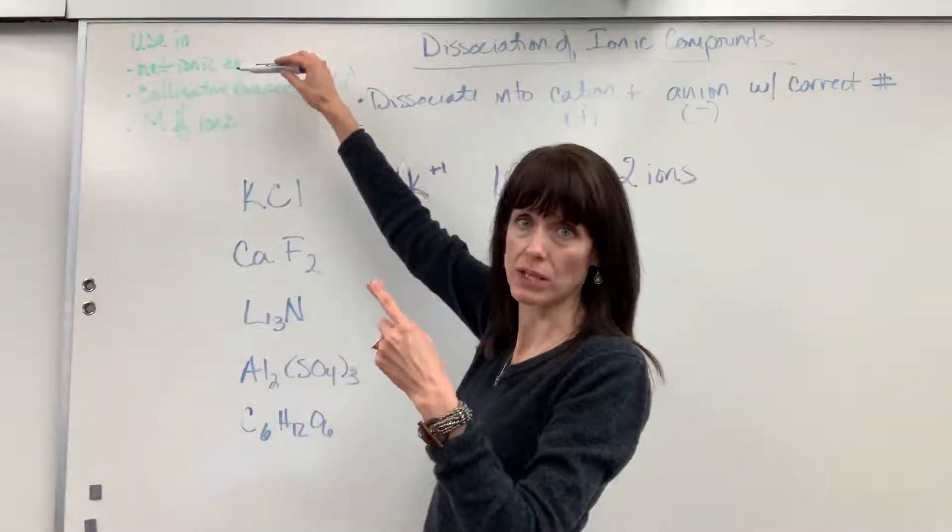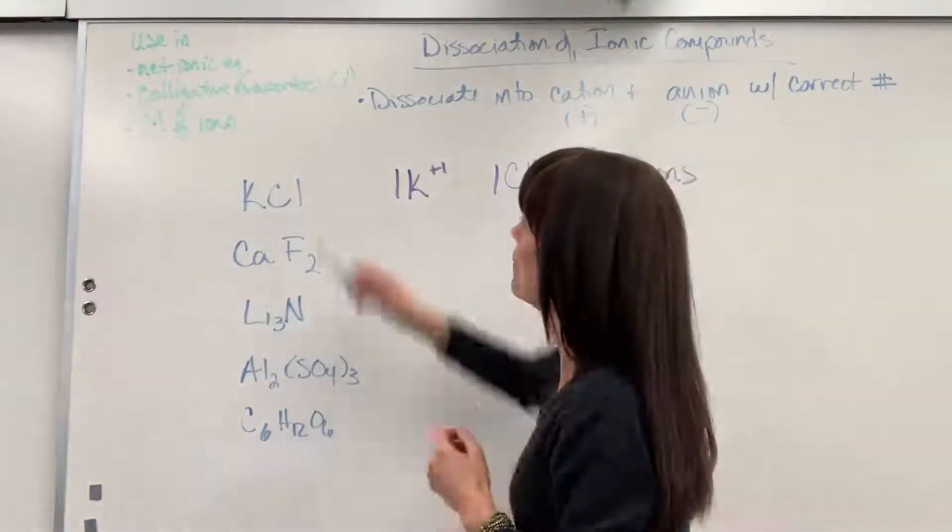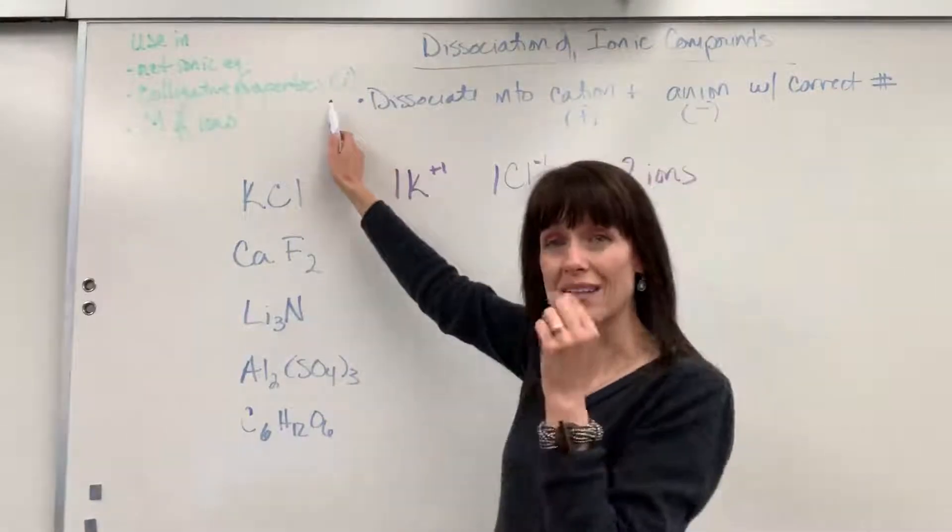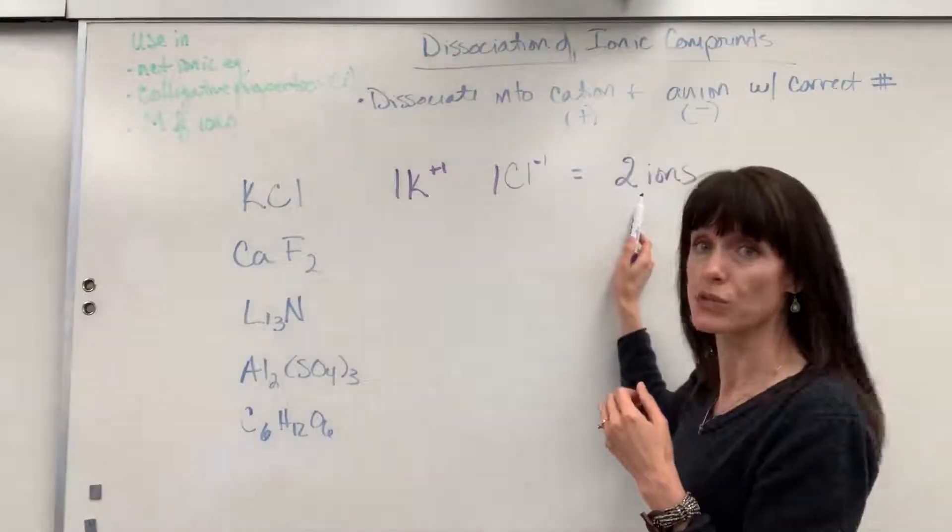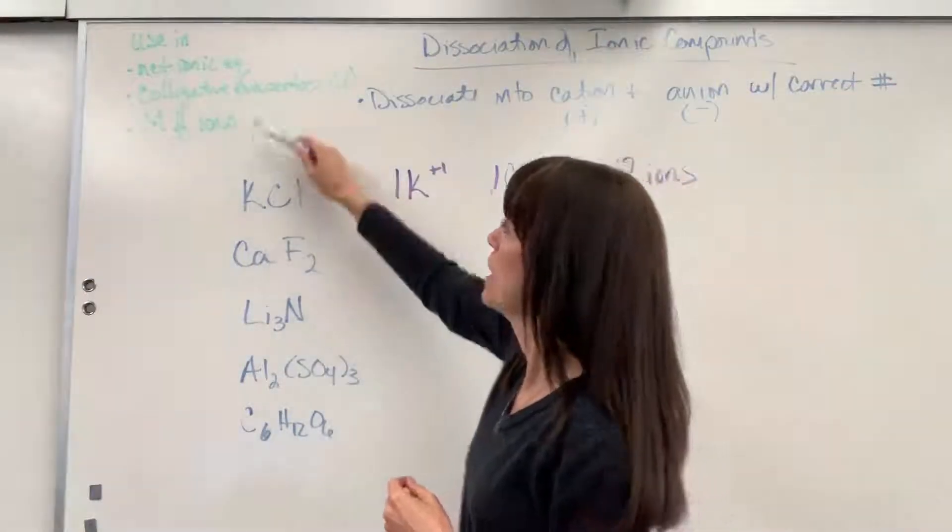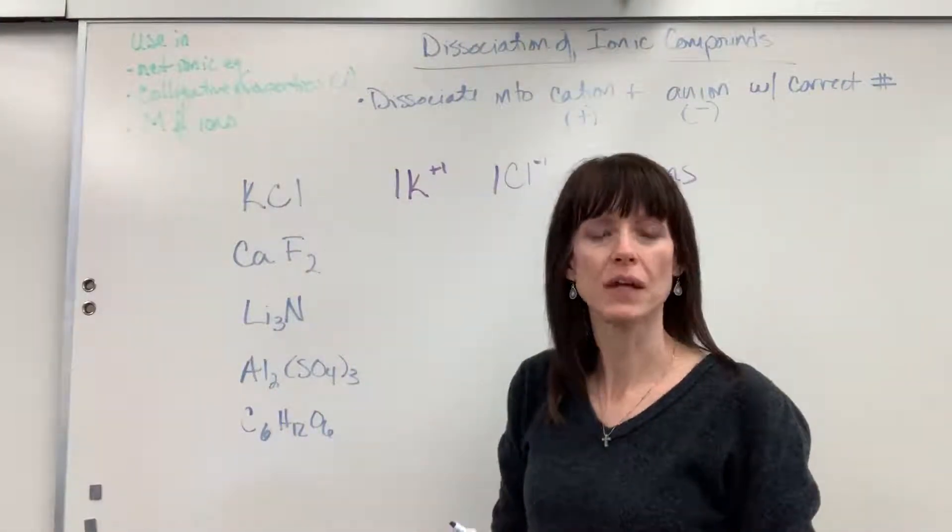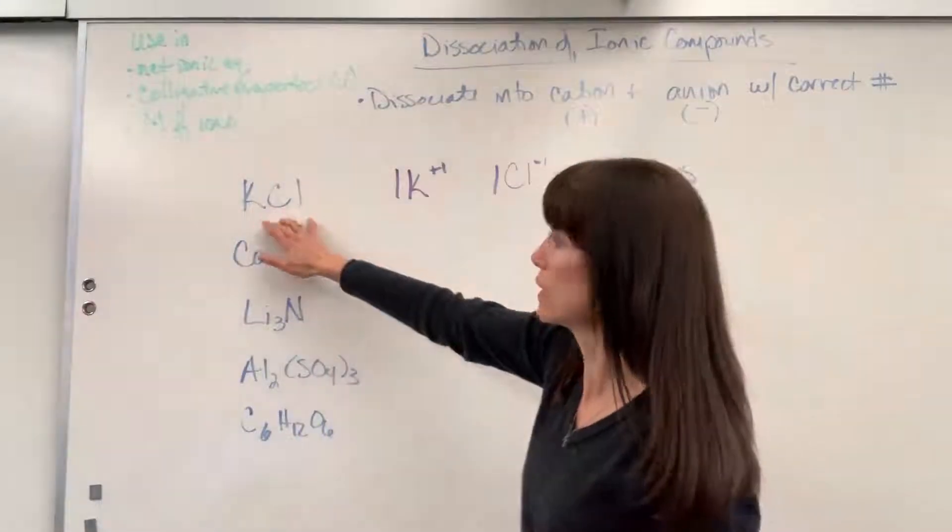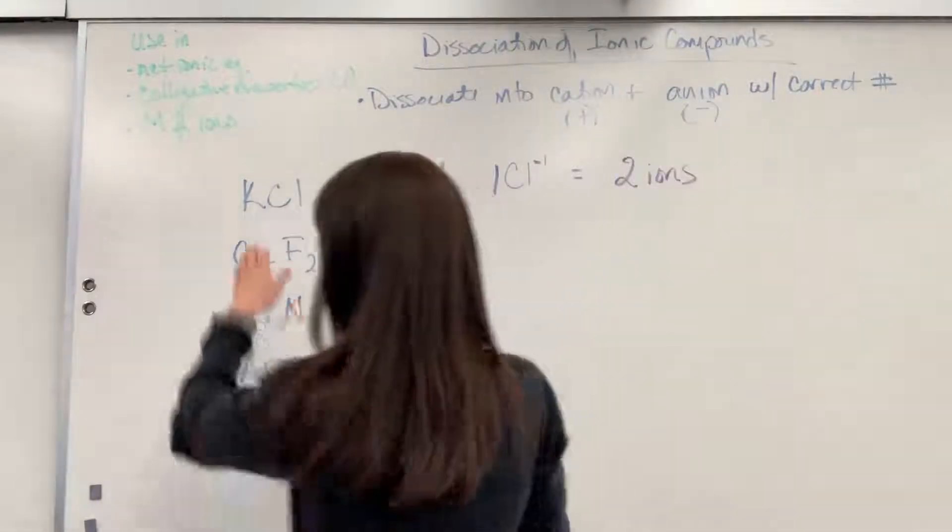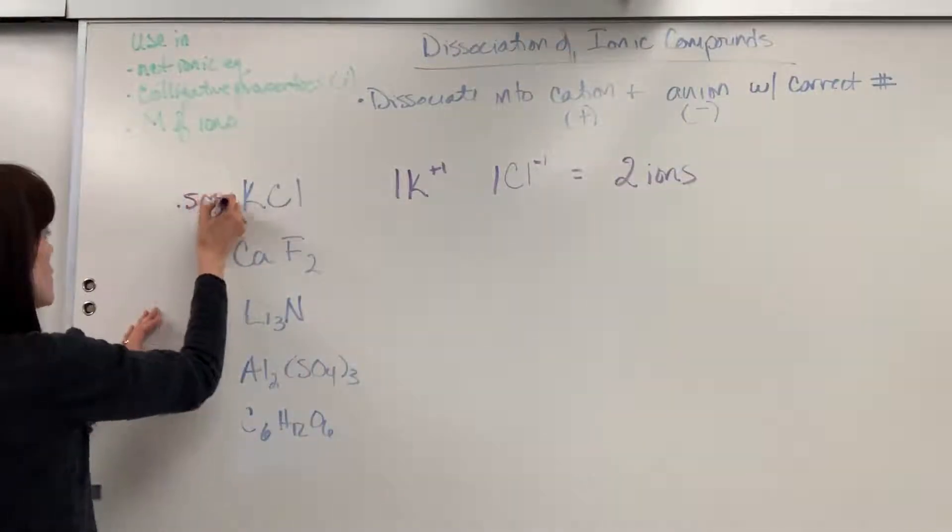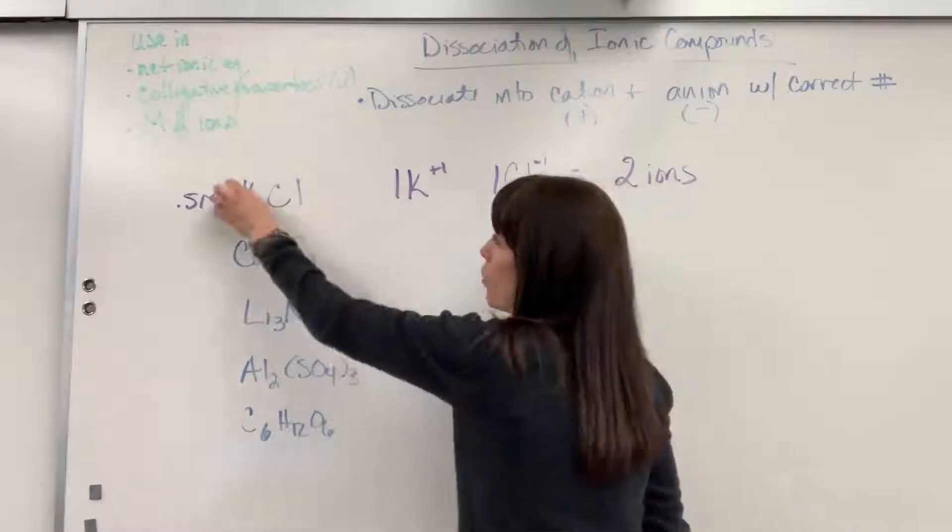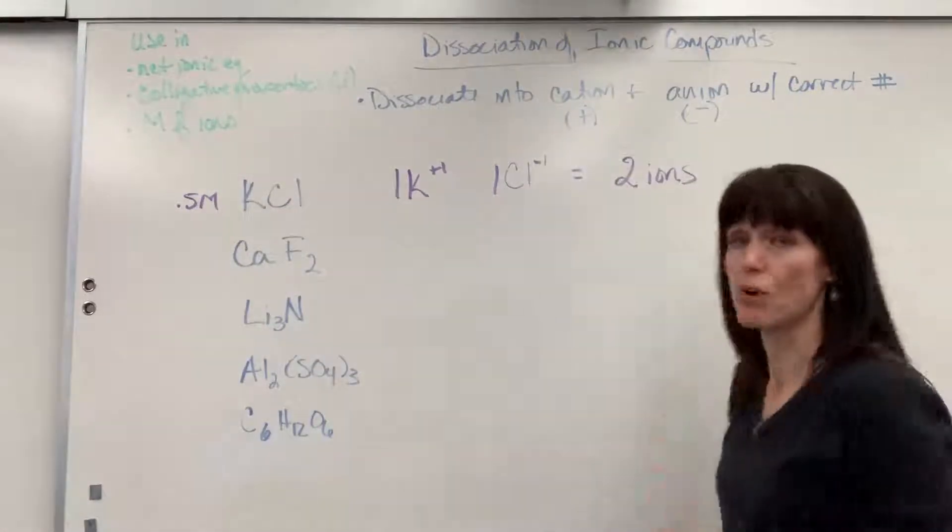Next, colligative properties. You have to count how many particles there are. It's your i symbol. So here my i would equal two. So very important with colligative properties. If you need to look that up, look under the playlist for solutions. And then next, molarity of ions. Sometimes you'll be asked, what's the molarity of the ions? Because potassium chloride is soluble. It will completely dissolve in water. So if this is a 0.5 molar solution, and they want to know molarity of the ions, well, if I have one potassium chloride, for every one potassium chloride it produces two ions.